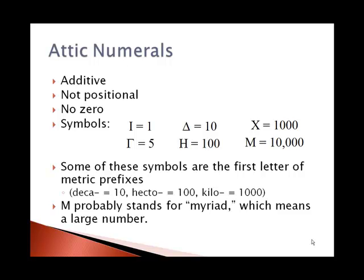The six symbols that were used were an I for 1, a capital delta for 10, a gamma for 5, a capital eta, which looks like an H, for 100, a capital chi for 1,000, and a capital mu, which looks like M, for 10,000.